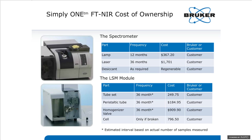For the LSM module, all the plastic tubing is out front so you'll notice immediately if any tubing starts to wear, crack, or become unstable. Replacement tube set costs are shown, with a nominal frequency of 36 months. For the homogenizer valve, you only replace it when necessary — there's no firm periodic maintenance schedule since it depends on the number of samples run through it. The quartz cell has about an $800 price tag, and you only have to replace it if broken — which is essentially never under normal operating procedures.